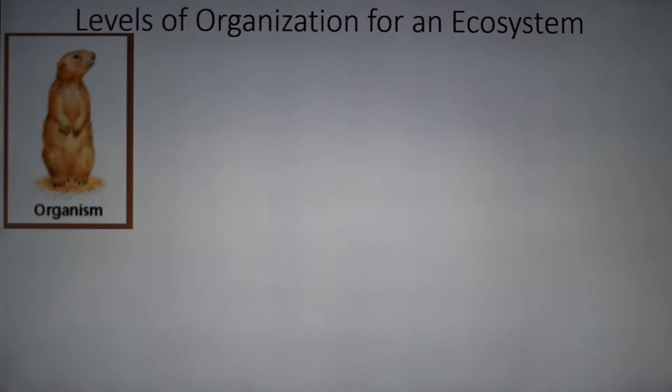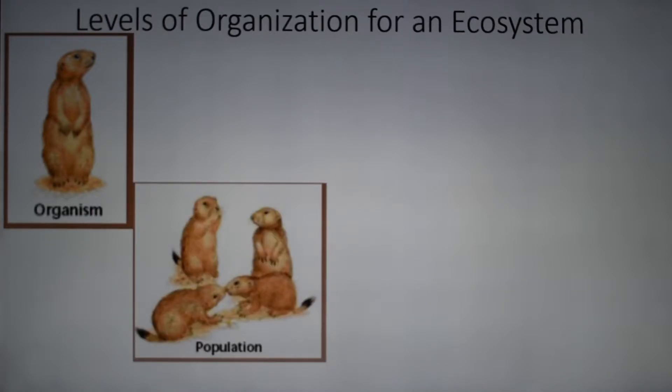Now let's talk about this cute little prairie dog. He's an organism. He's lonely though, and he needs some buddies. So let's give him a population. Now there's a group of prairie dogs. We call that a population. A population is a group of organisms of the same species. That would be you and your family and your neighbors — that is a population.